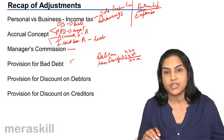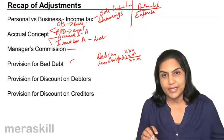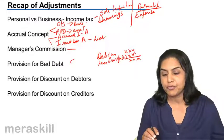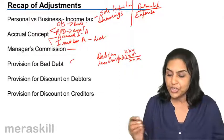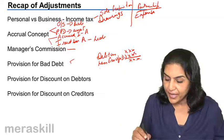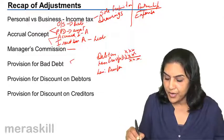We do that by saying profit and loss account debit to provision for discount on debtors. How is it shown in the balance sheet? Again, by deducting it. Less provision for discount.